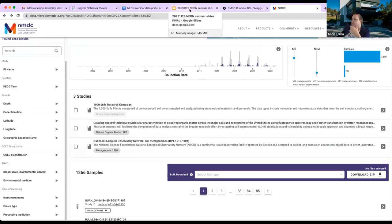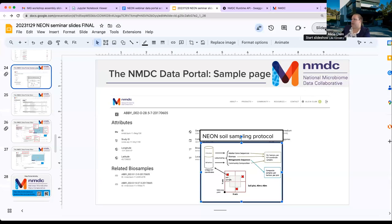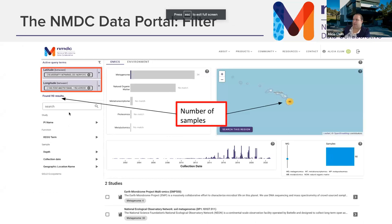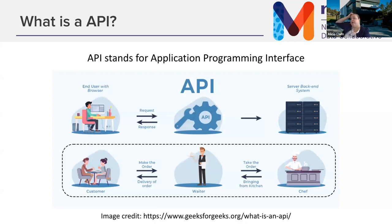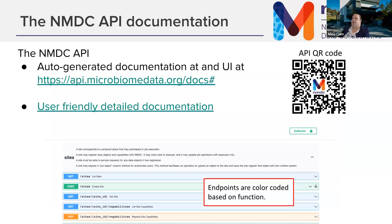API stands for Application Programming Interface — it's an intermediate so you don't have to know what the technology stack is on the backend. The common analogy is going to a restaurant: you give your order to the waiter, the waiter communicates with the kitchen, and the waiter brings back your order. It's just a consistent intermediate layer you can access programmatically. Here's the link and QR code to the NMDC API.